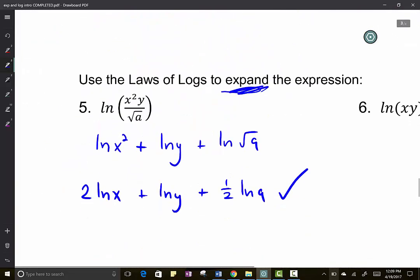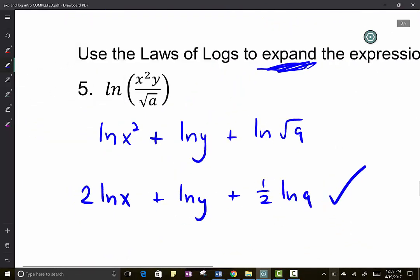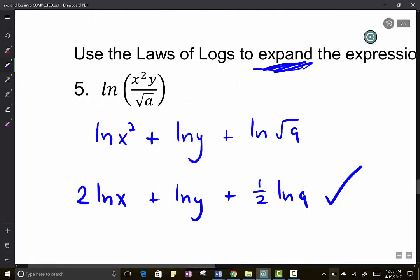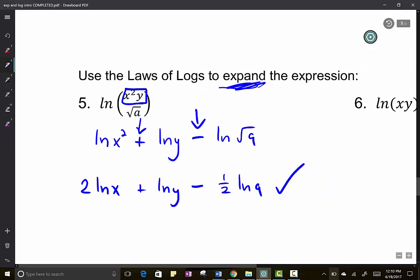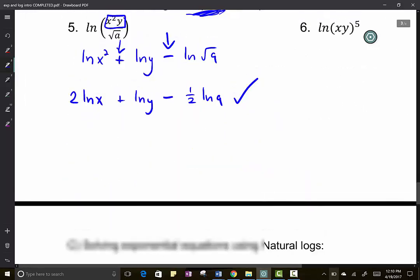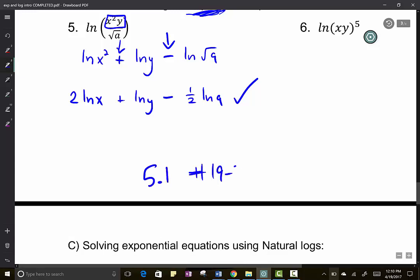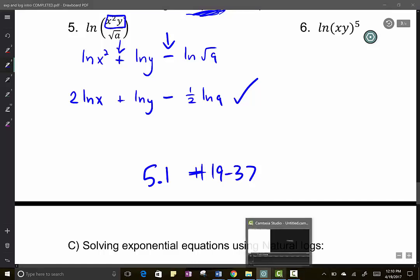For sixth period, I'm actually going to stop the video here. And work with second period, but you can see the next section is literally just you do all the rules in reverse. So when you see these things being multiplied here, you split them up with this plus sign. When you see it divided, you split it up with a minus sign. And where do the exponents go? For the square root, the one half went down front. For the two, it went down front. Use this and work on the textbook 5.1, problems 19 through 37. You can see this on the module.